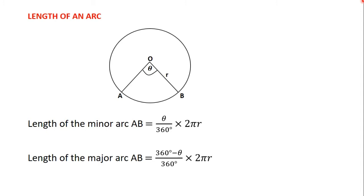In the video on parts of circles we learnt that an arc is a part of the circumference. So for example, in this circle here where O is the center, we know that OA is a radius and OB is also a radius. You can see that angle theta is being formed between these two radii. AB is an arc — we have a minor arc AB and a major arc AB.